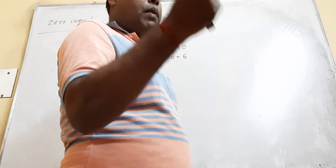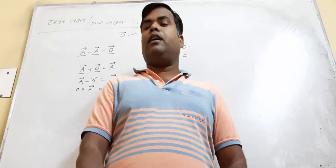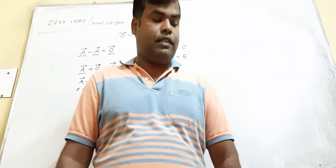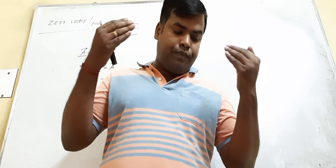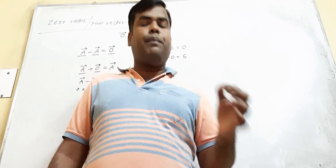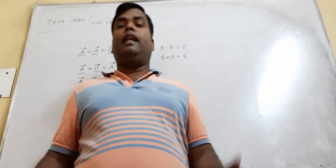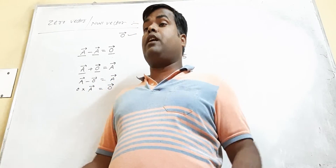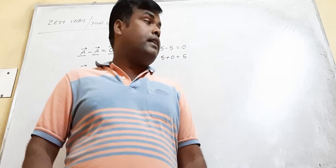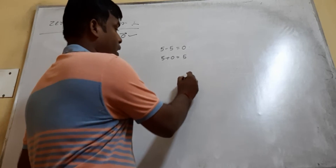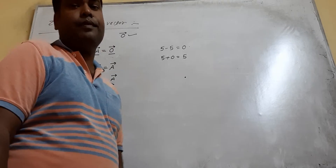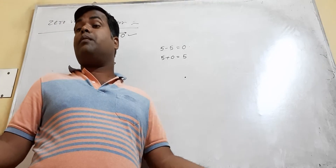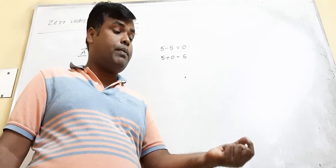To summarize: a zero vector is a vector having zero magnitude and arbitrary direction. If you represent a zero vector by a line, the length of the line will be zero, which means it is equivalent to a point. So a zero vector can be represented by a point.